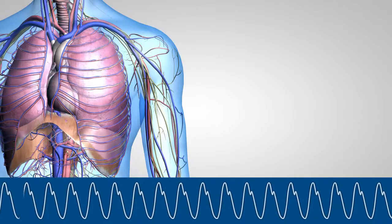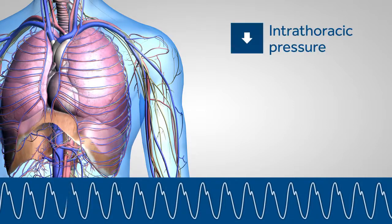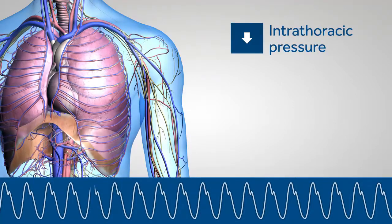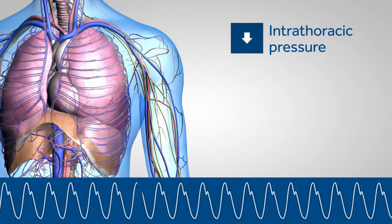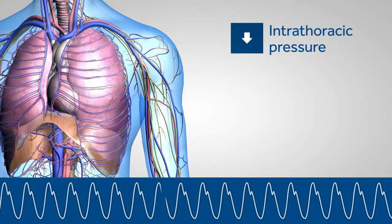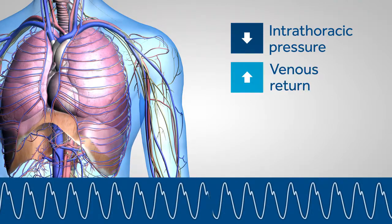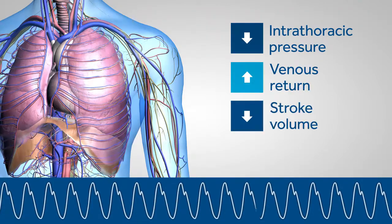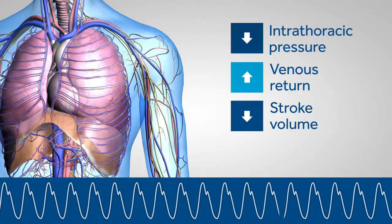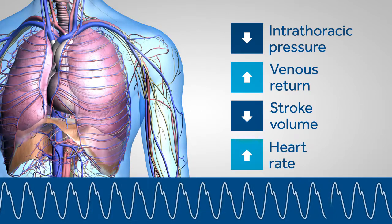During inspiration, the diaphragm contracts, which decreases intrathoracic pressure. As the intrathoracic pressure decreases, venous return increases, left ventricular stroke volume decreases and heart rate increases.